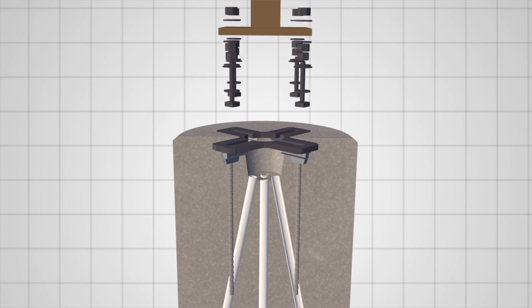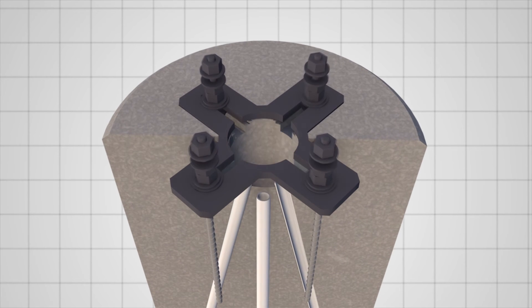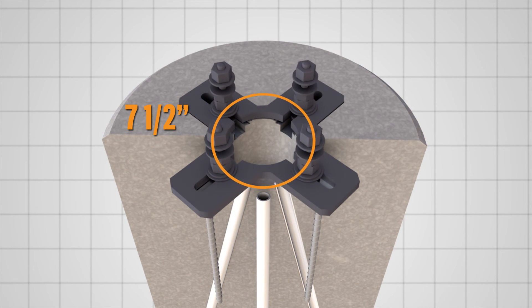The adjustable bolt pattern feature makes it easy to shift the bolts to fit all bolt circle dimensions ranging from 7.5 inches to 11 inches. This eliminates misalignment issues and simplifies installation of the light pole.